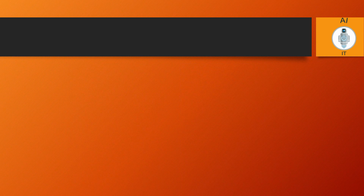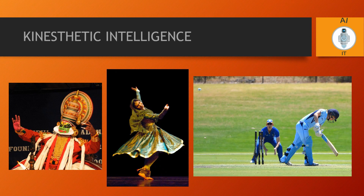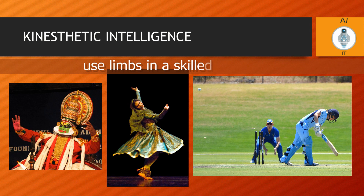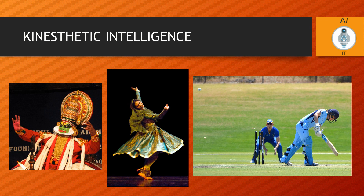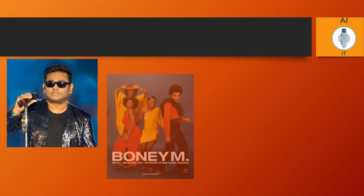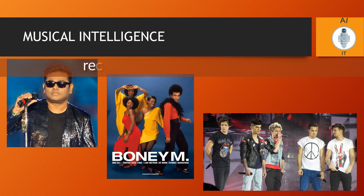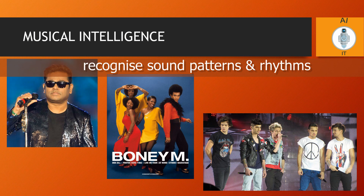Dancers and players have the ability to use their limbs in a skilled manner, so the fourth type of intelligence is kinesthetic intelligence. Composers, singers, and musicians have the ability to recognize sound patterns and rhythms, which is the fifth type: musical intelligence.